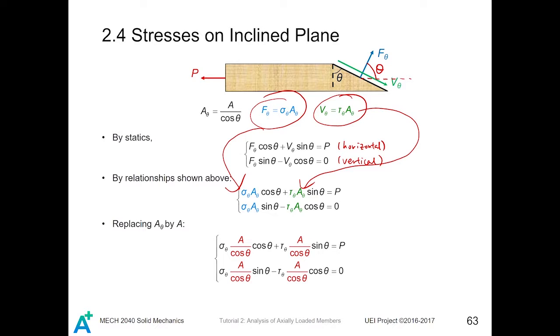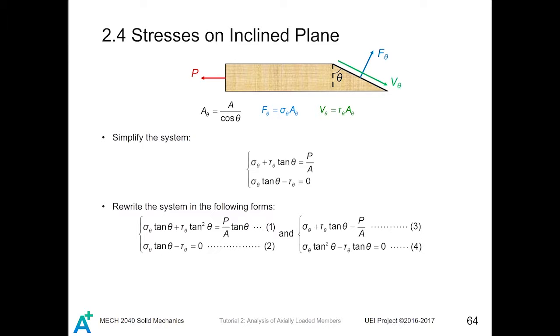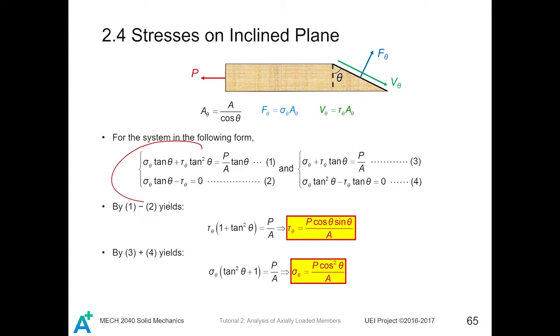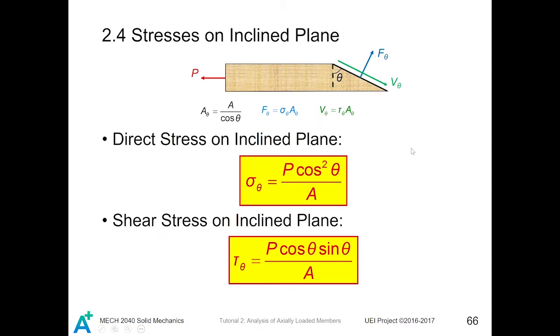Now, we replace A theta by using A divided by cosine theta. Then, we simplify the system. Besides, we rewrite this system such that we can do some cancellations of the equations. For those two rewritten systems, we adopt one minus two to get this result. By this rewritten system, we have the direct stress of the inclined plane.